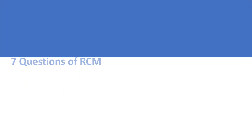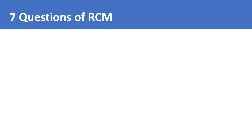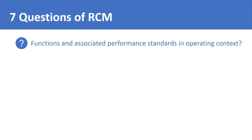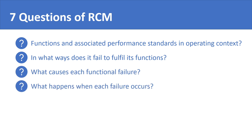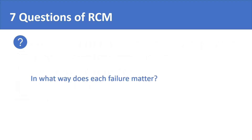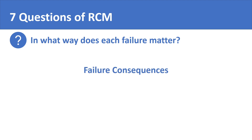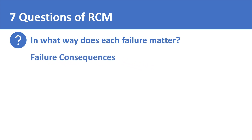The first four questions of RCM discussed about the functions, functional failures, failure modes, and failure effects. The fifth question of RCM asks: in what ways does each failure matter? Or in other words, what are the consequences of each failure? In the context of reliability-centered maintenance, consequences have three categories.